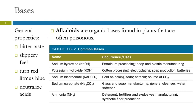Alkaloids are organic bases that are found in plants, and they are often poisonous. Bases have a bitter taste, and so humans and animals tend to be repelled by these bitter plants, which is great because they're bad for you. A famous alkaloid is hemlock, as in Romeo and Juliet.